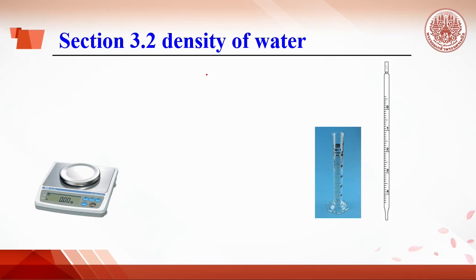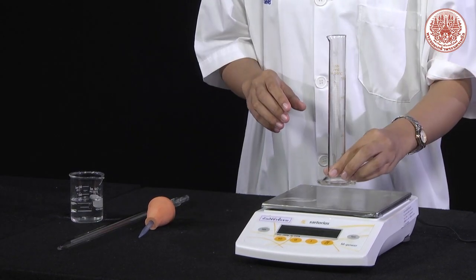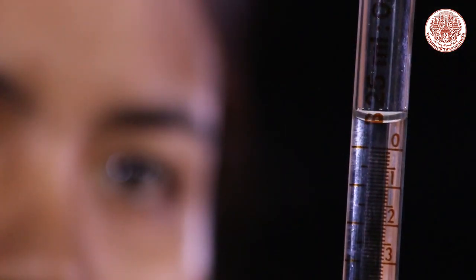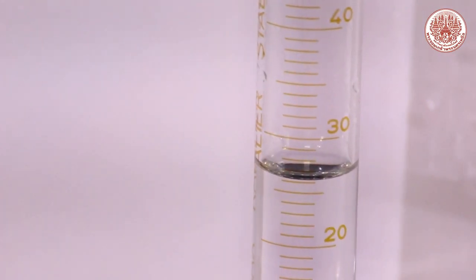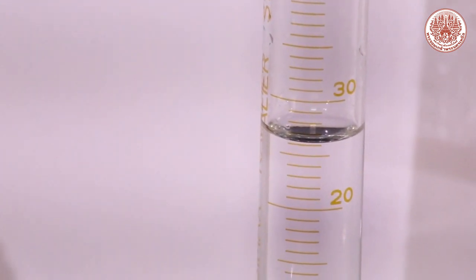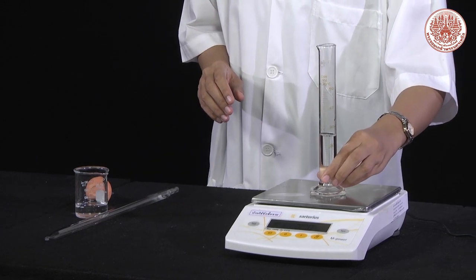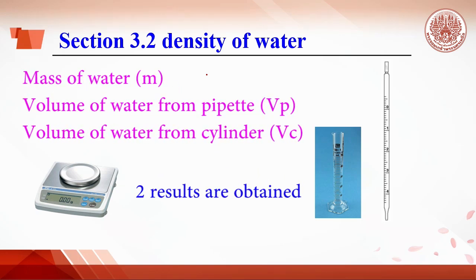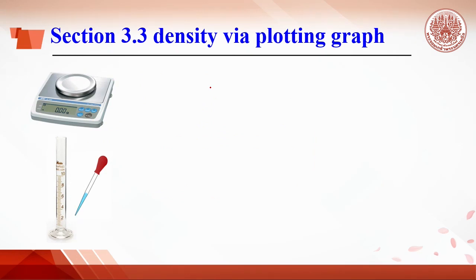In Section 3.2, the density of water equals mass divided by volume. Both the weight and volume of water must be measured. Weigh a dry, clean 50 ml graduated cylinder, then pipette 25 ml of tap water and transfer it to that cylinder. With this measurement, the density of water can be obtained.